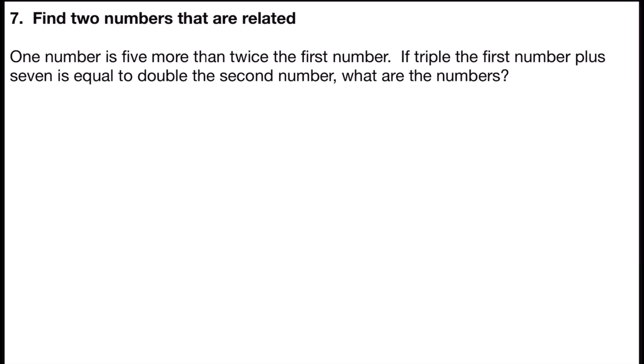If I look at my first sentence, it says one number is five more than twice the first number. So my first number, I'm going to call x. Remember, you're always going to call one of your unknowns x.